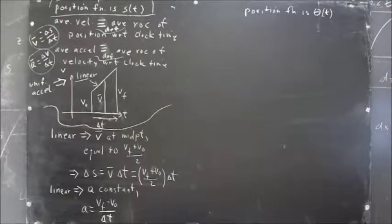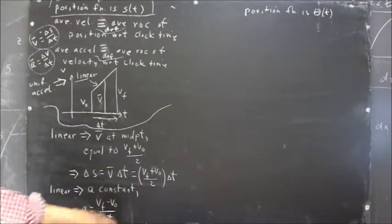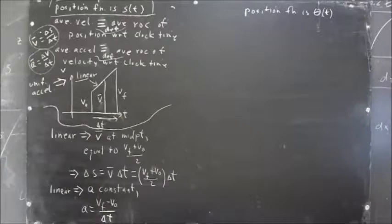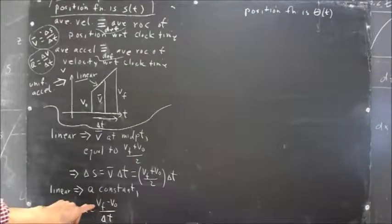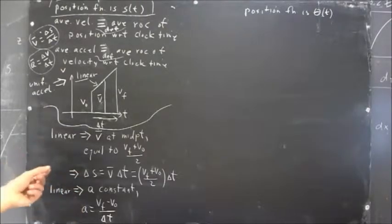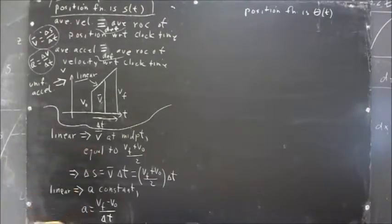You should be very familiar with the fact that if you eliminate delta T from these two equations, you get an equation that relates the displacement delta S to the initial and final velocities and the acceleration without any reference to delta T. And if you eliminate VF from these equations, you get an equation that gives you delta S in terms of V naught, delta T, and A.